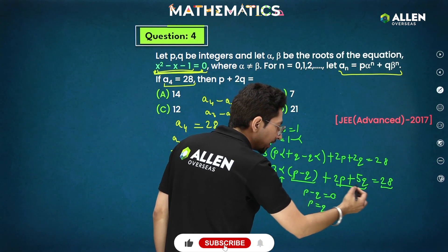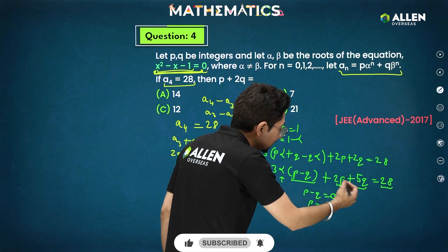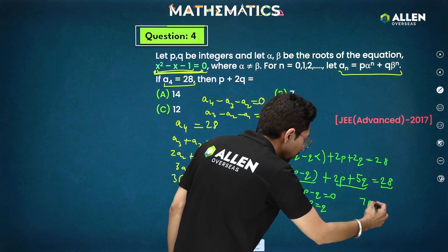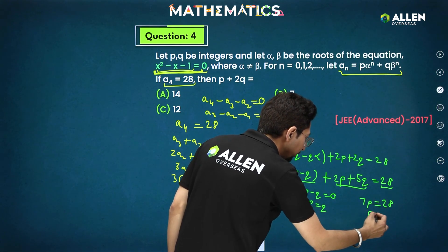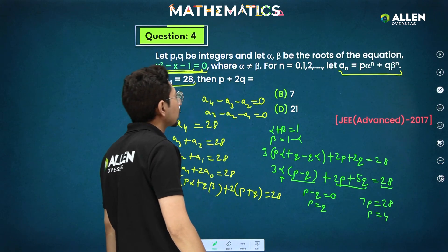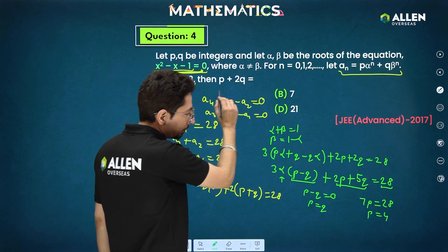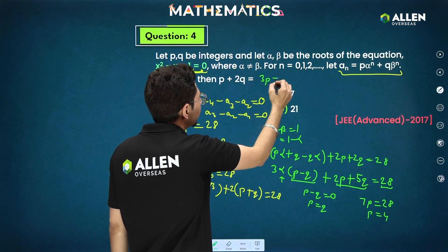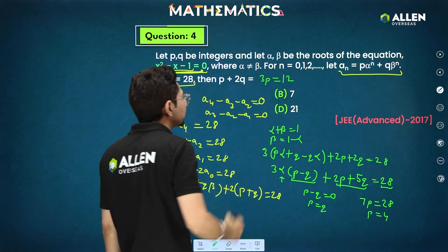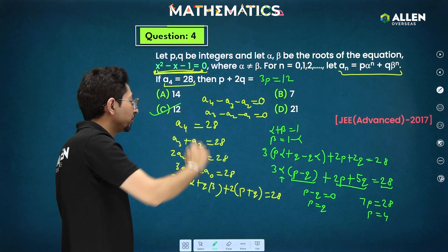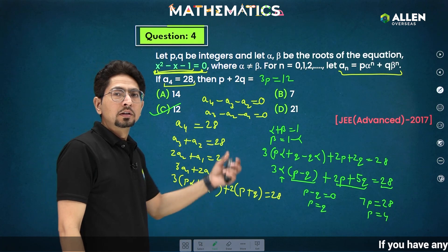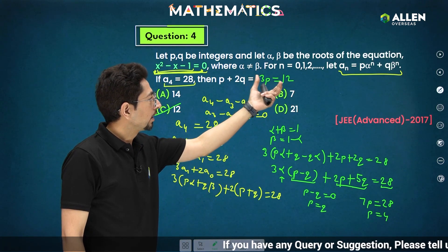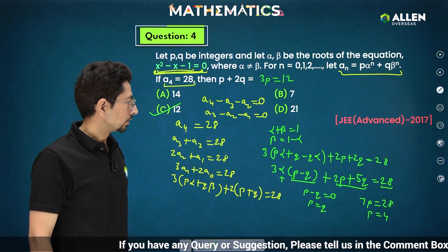This equal to 28 that means you can directly write 7p. Because p and q are equal that gives you p as 4. What you require p plus 2q that will be p and q are equal only. So this is 3p which will be 3 into 4, 12. Easy part if you go through Newton's theorem. If you go through finding the roots and finding different terms, that will be lengthy method.